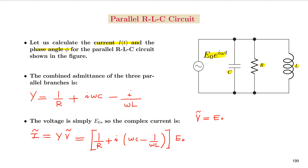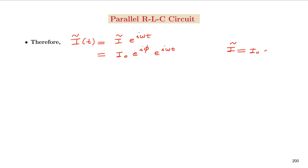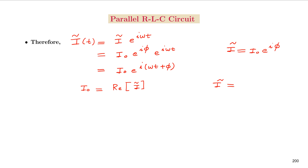This is the complex current. If we want to find the time-dependent current I(t), we can multiply by e^{iωt}. The complex instantaneous current is I·e^{iωt}, which equals I0·e^{i·phi}·e^{iωt} = I0·e^{i(ωt+phi)}, since the complex amplitude I equals I0·e^{i·phi}. The real part I0 is given by the real part of I complex, which equals (1/R + i(ωC − 1/(ωL)))·E0.